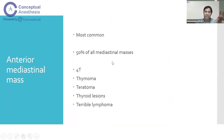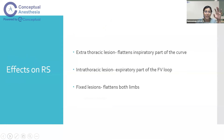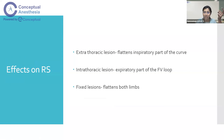Anterior mediastinal masses are the most common, constituting about 50% of all mediastinal masses, and are remembered by the mnemonic 'Four T's': Thymoma, Teratoma, Thyroid lesions, and Terrible lymphomas. Depending on the effect on the respiratory system, mediastinal masses can be classified as extrathoracic lesions — which flatten the inspiratory limb of the flow-volume curve — intrathoracic lesions — which flatten the expiratory limb — or fixed lesions causing fixed tracheal stenosis, which flattens both inspiratory and expiratory limbs.